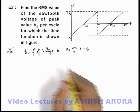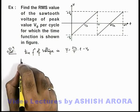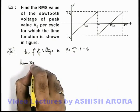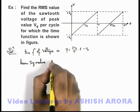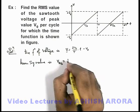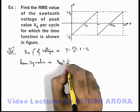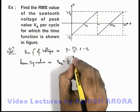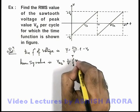Now that we have the time function of voltage, we can directly calculate the mean square value. Vms can be written as the average of the square, which is (1/T) times the integration from zero to T of V²dT.